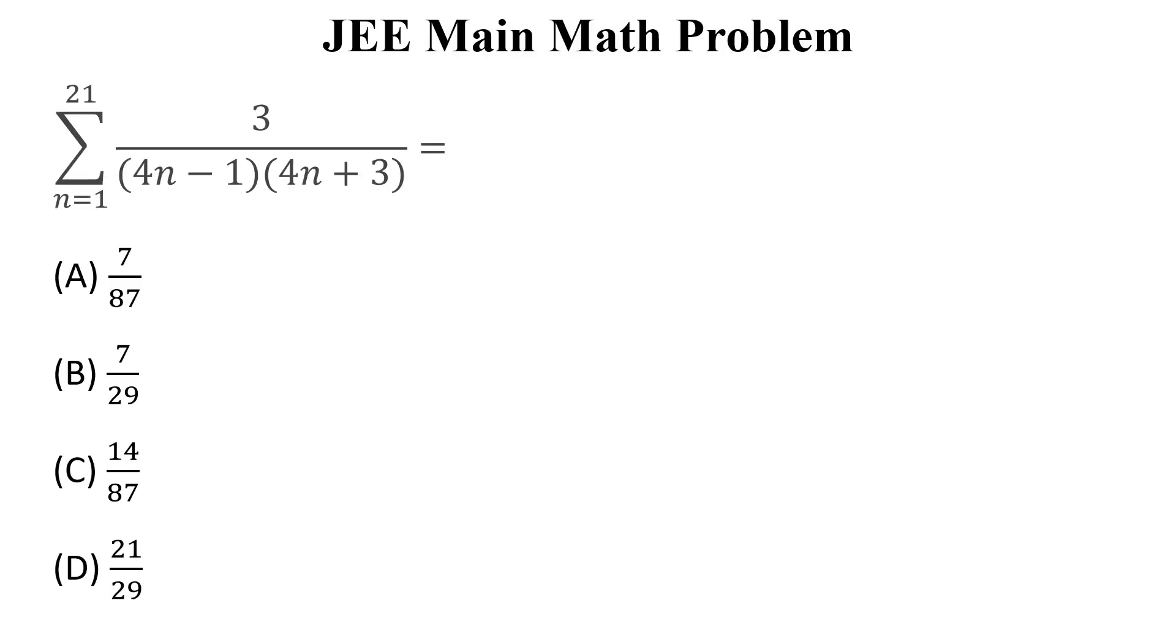Let's begin to solve the question. The question is: summation n starts from 1 up to 21, 3 divided by (4n minus 1) into (4n plus 3) is equal to what? What is the correct option?